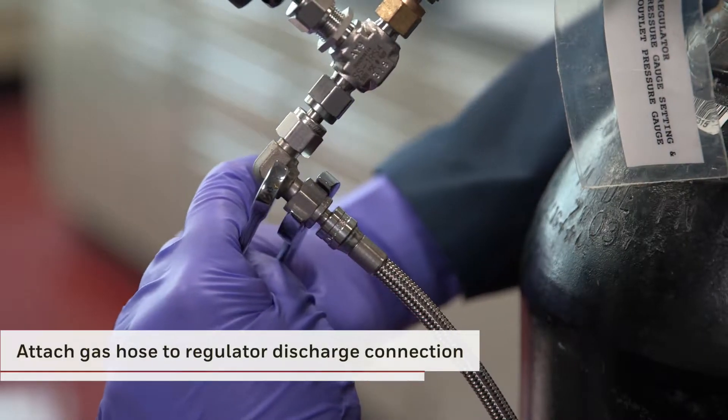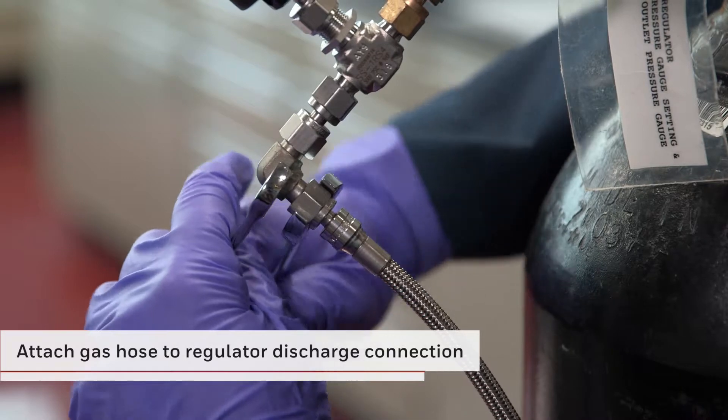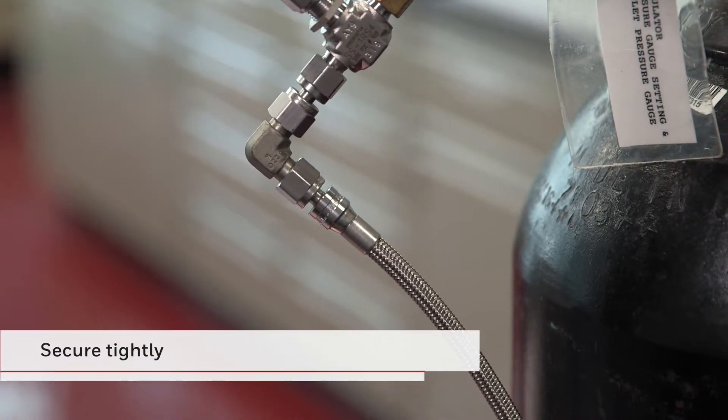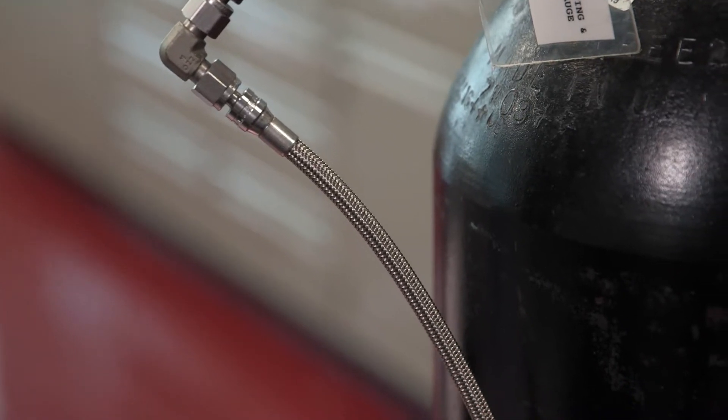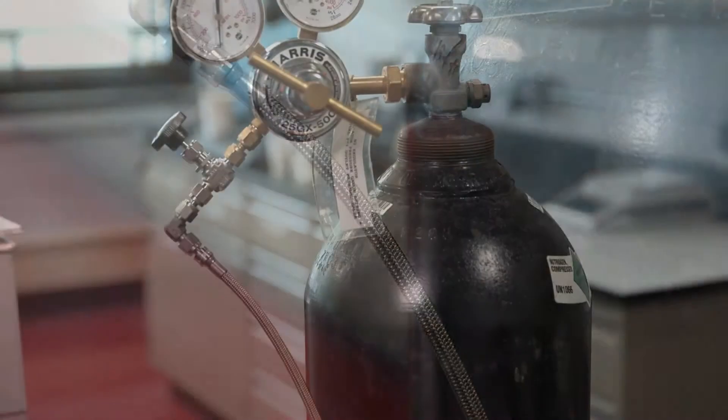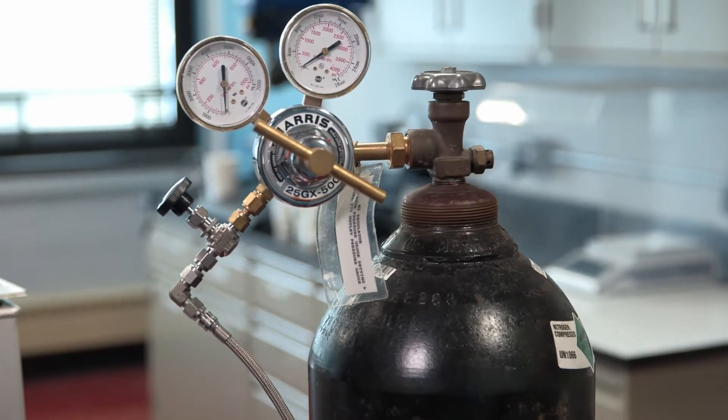Next, be sure that the gas hose is attached to the nitrogen regulator discharge connection. Secure tightly. As mentioned, it's essential that the gas hose is rated for nitrogen use. This completes this stage of the nitrogen tank preparation.